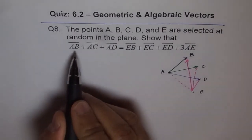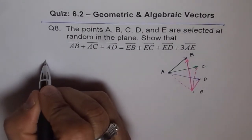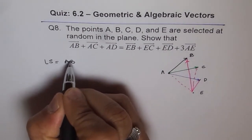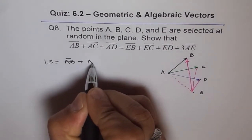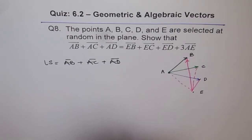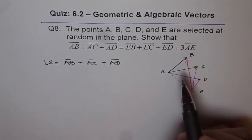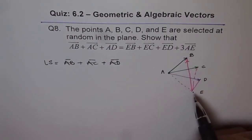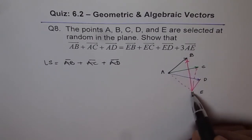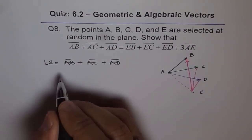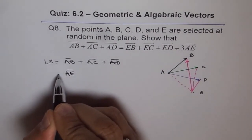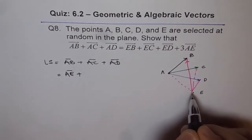So let us start with the left side. Left side for us in this expression is AB plus AC plus AD. Now, since we want in terms of E, AB can be written as AE plus EB. So we will write this as AE plus EB.